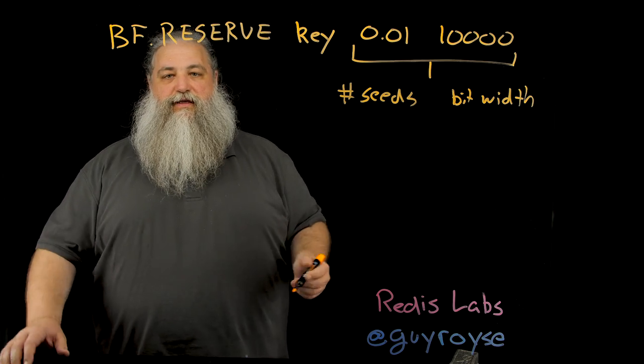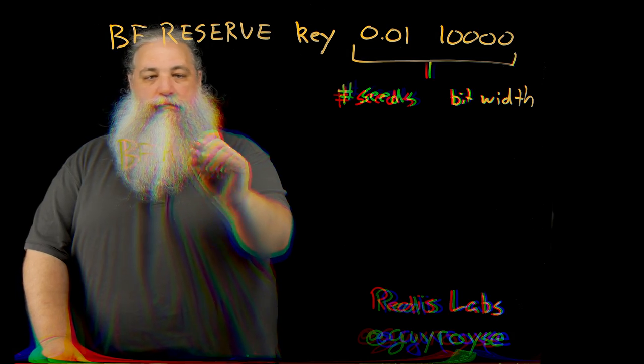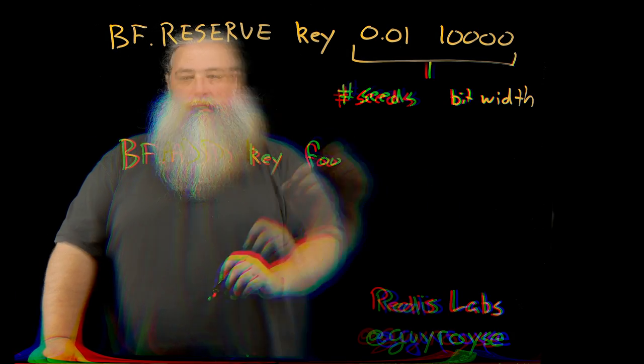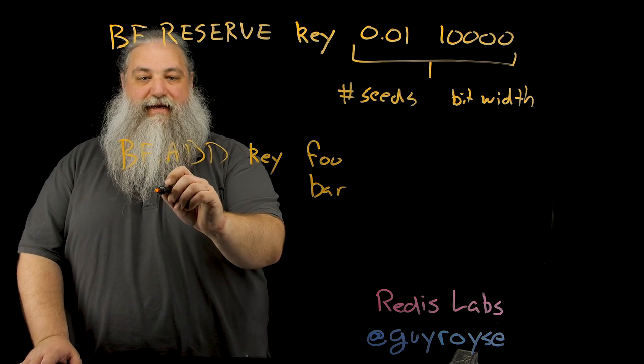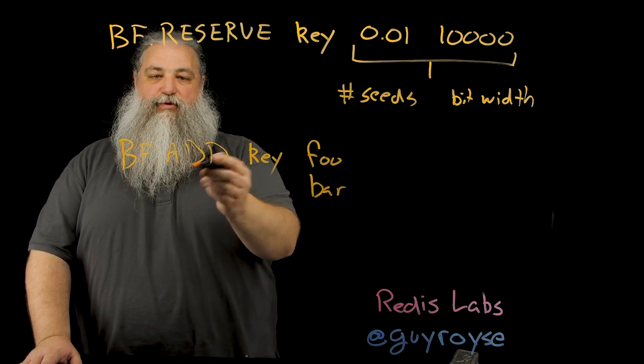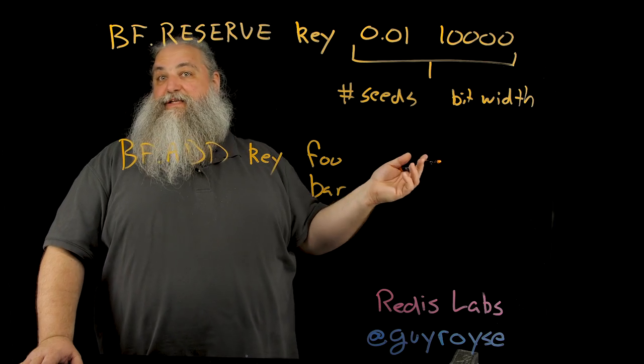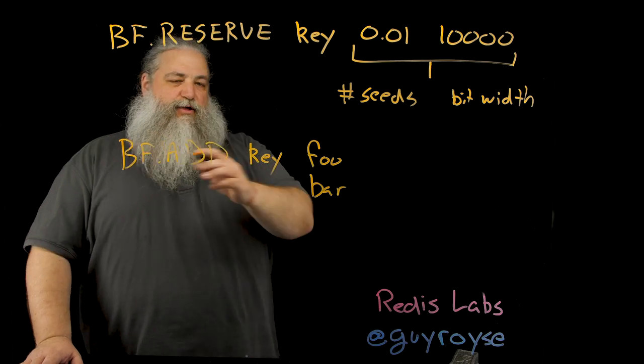Once you've created these things, you can call BF.ADD, pass in your key, and then we're going to add foo. And then we could add bar. If you wanted to add multiple things at once, there's actually a BF.MADD, multiple add. And so it works just like this. It's just .MADD. And so you could do that all in one command.